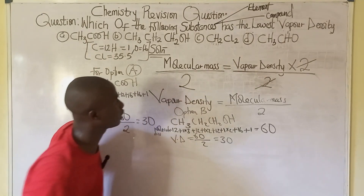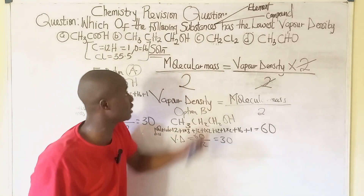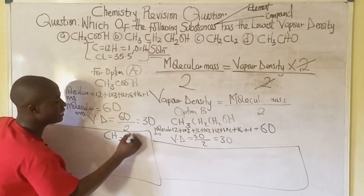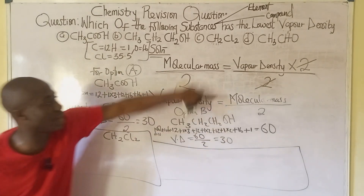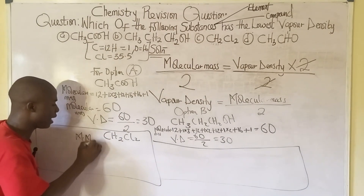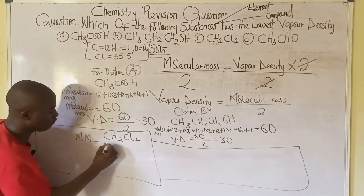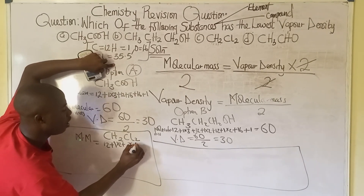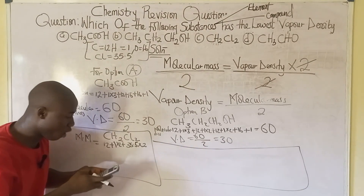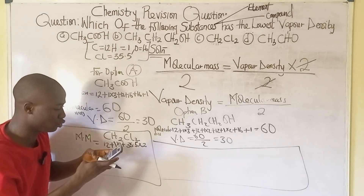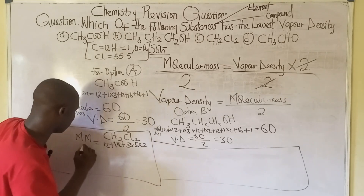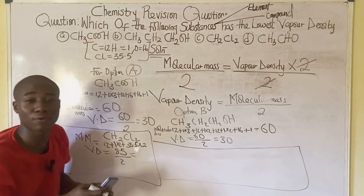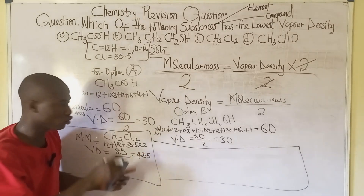For option C, the compound is CH₂Cl₂. The molecular mass is: 12 + (1×2) + (35.5×2) = 85. So the molecular mass is 85. The vapor density is 85 ÷ 2 = 42.5. This value is larger than the values we've gotten for options A and B.